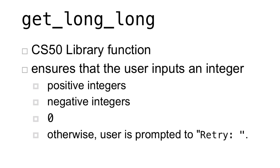Let's jump right in with prompting for user input. The credit card number is of data type long long, so the CS50 library function get_long_long will be quite useful. But this function ensures that the user inputs any integer — positive integers, negative integers, or 0 are all fine. So it's up to you to further validate whether or not the user has given us a valid credit card type number.